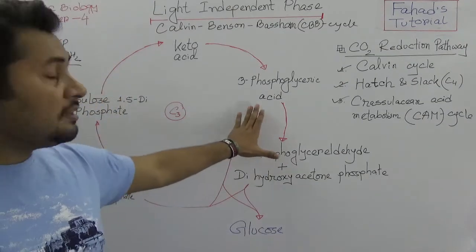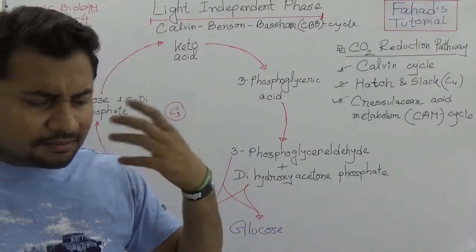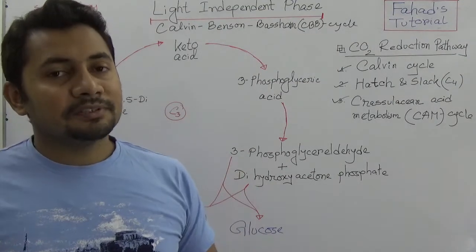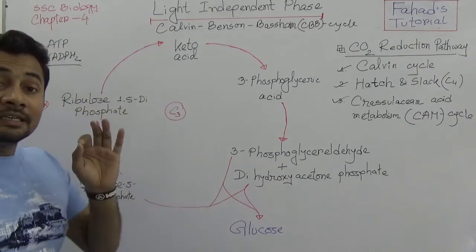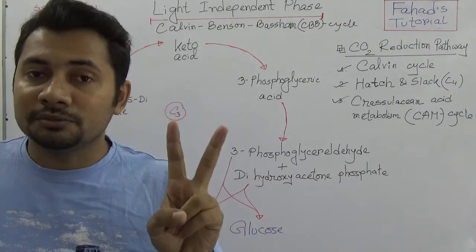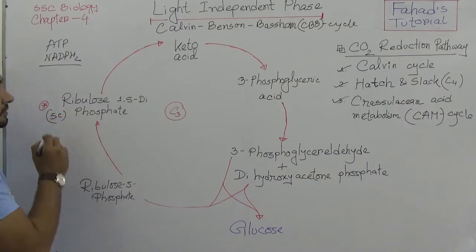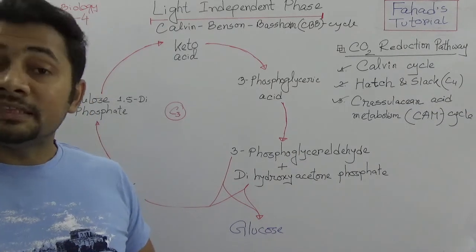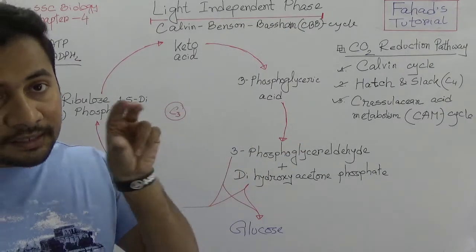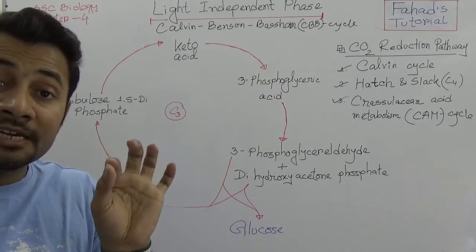The process begins from ribulose-1,5-diphosphate. Ribulose is a 5-carbon compound. In this 5-carbon compound, 2 phosphates are attached, and that is why it is named ribulose-1,5-diphosphate.